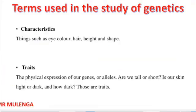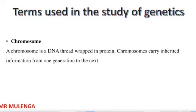Characteristics are things such as eye color, hair, height, and shape. Traits are the physical expressions of our genes or alleles. For example, whether we are tall or short, or whether our skin is light or dark — these are what we call traits.